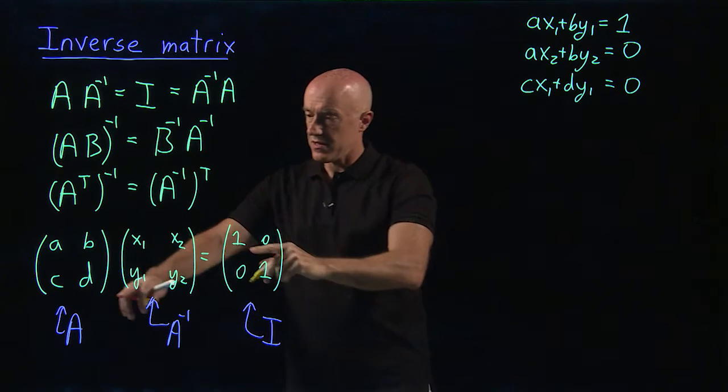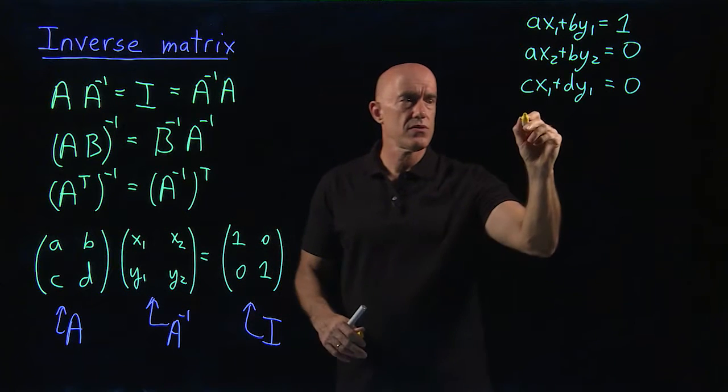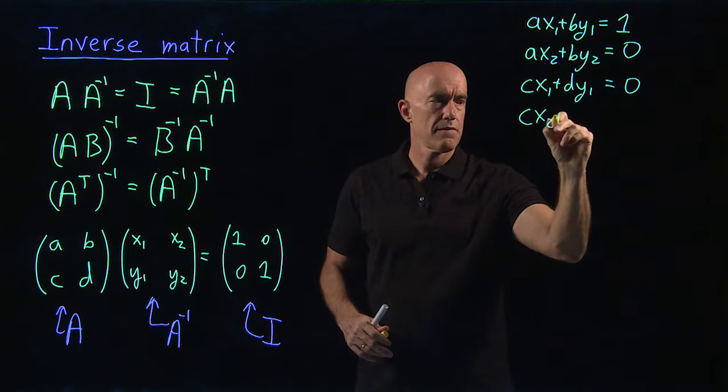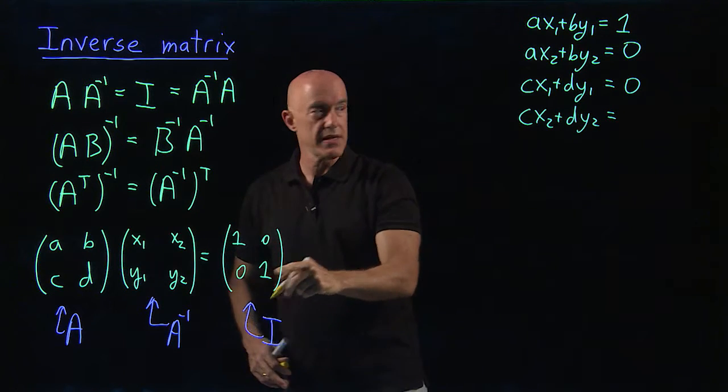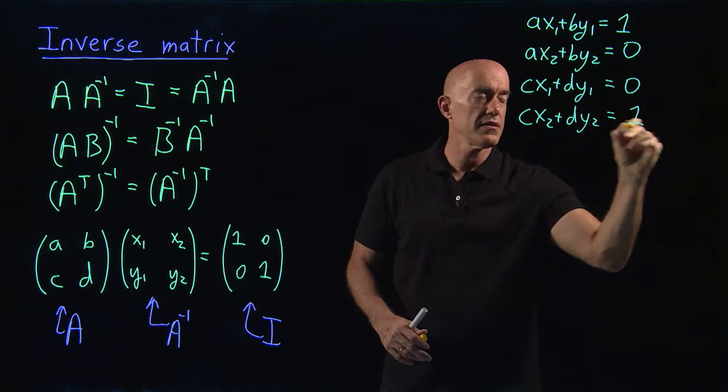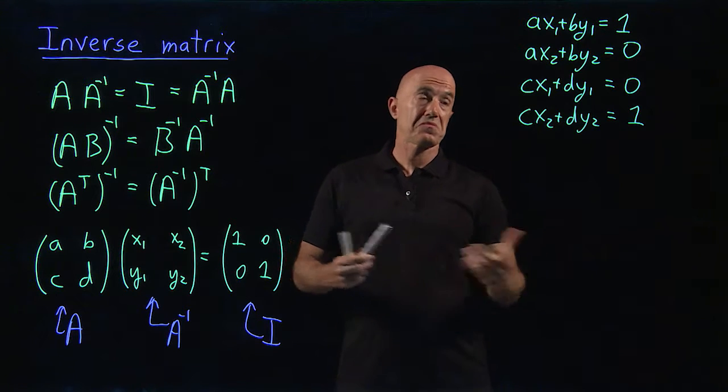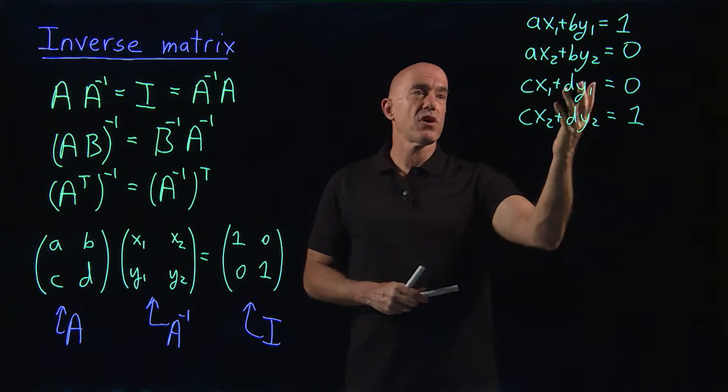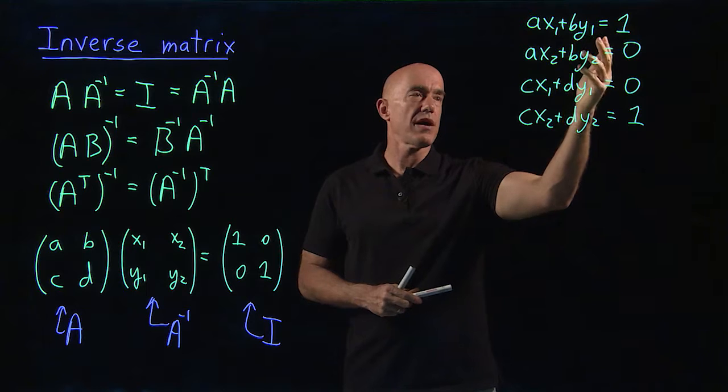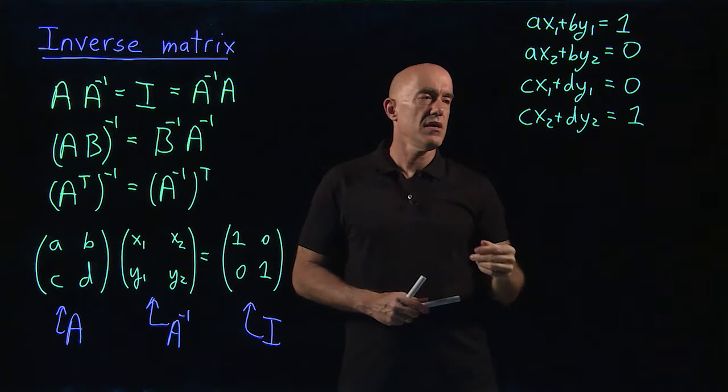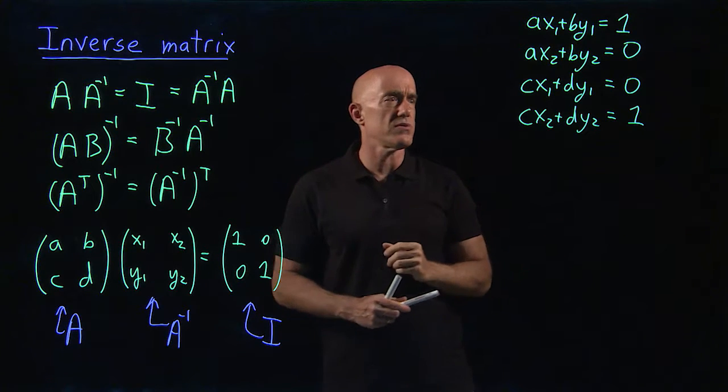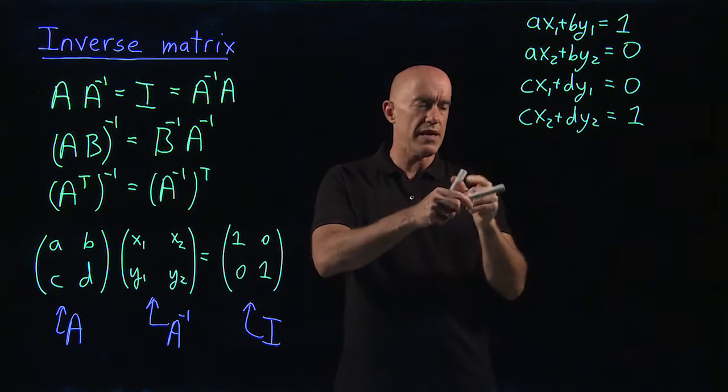And finally we have cx2 plus dy2. And that's this last element here, which is 1. We have four unknowns: x1, y1, x2, y2. And we have four equations. So you'd think we can solve for all the unknowns. So how would we do that?